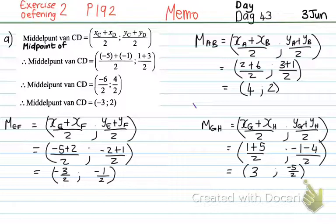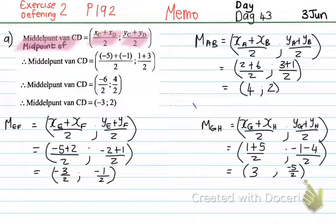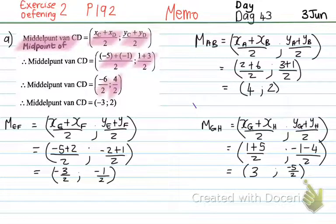They're asking us to determine the midpoints of the following line segments. To determine the midpoint of CD: (xC + xD) / 2 and the y-values added divided by 2. The x-values are -5 and -1 divided by 2, and the y-values are 1 + 3 divided by 2. -5 + (-1) = -6 ÷ 2 = -3, and 1 + 3 = 4 ÷ 2 = 2. So the midpoint of CD is (-3, 2).